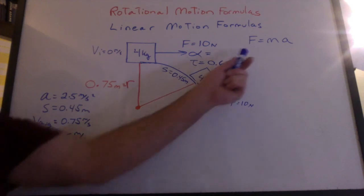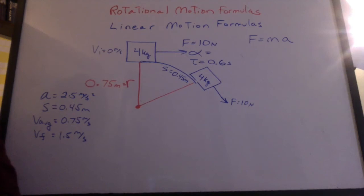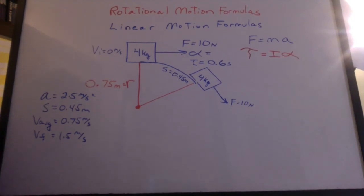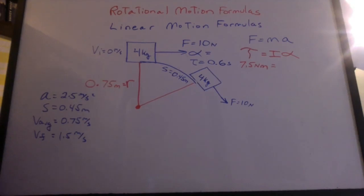Well, just like we use F equals ma, that's Newton's second law of motion in linear terms, we'll use Newton's second law of motion in rotational terms to find alpha. The torque is a force times the distance that's perpendicular measured from the pivot. That's 10 Newtons times 0.75 meters. That's 7.5 Newton meters.